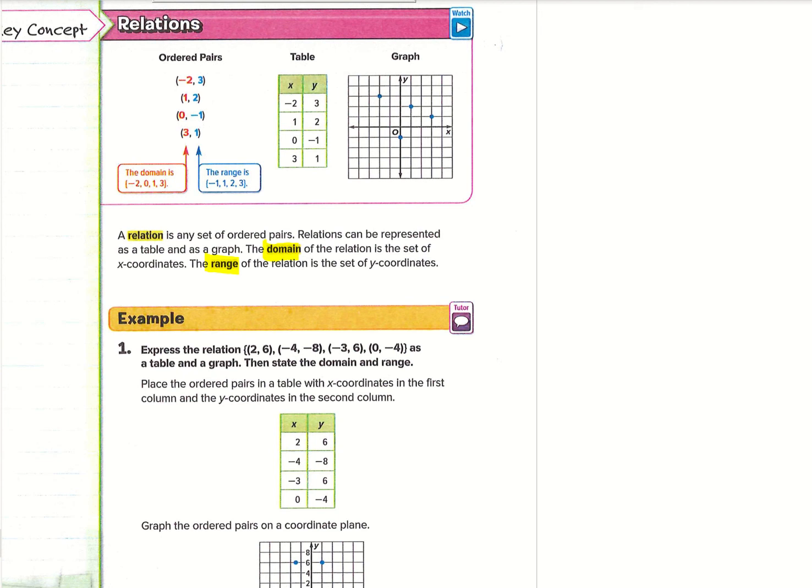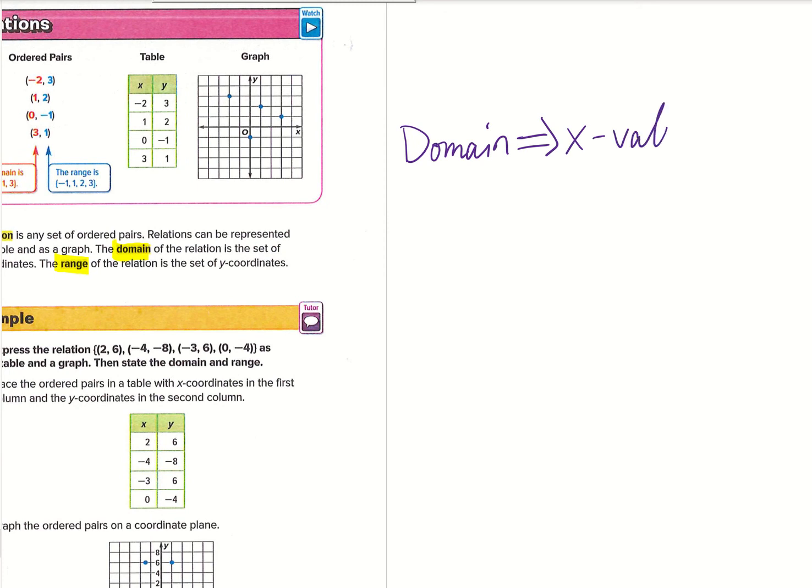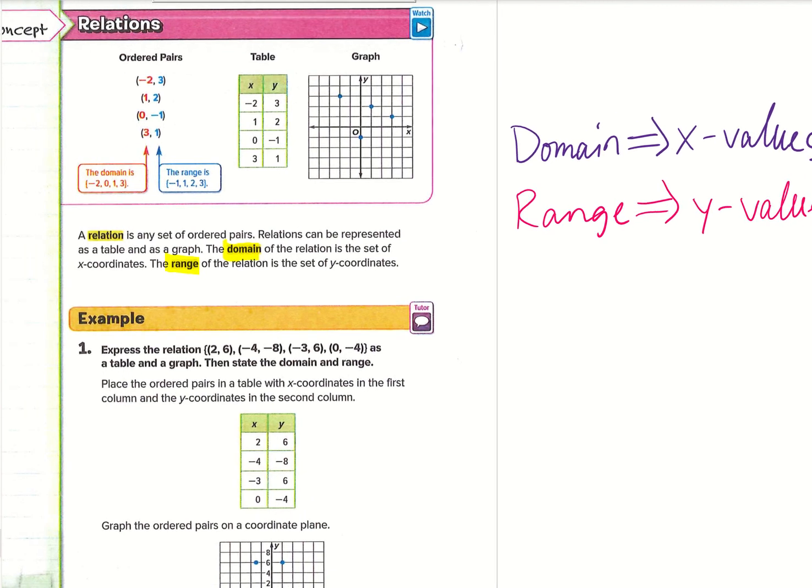So basically the domain just means your x values, while your range is your y values. That is a main thing that you need to know off of this part of the notes.